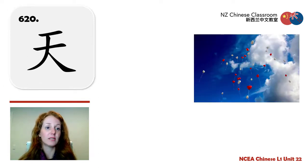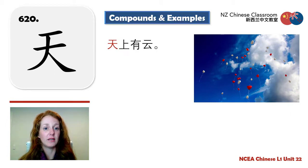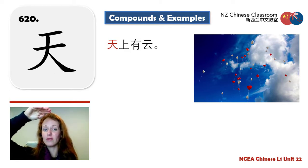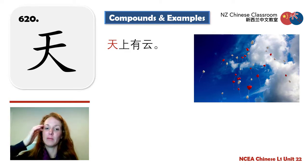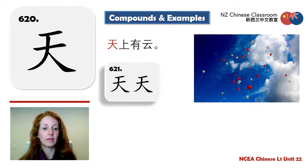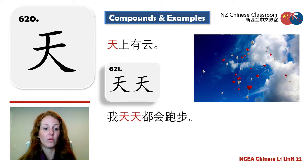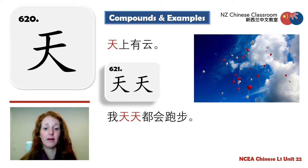天 — sky, heavens. Example: 天上有云 — There are clouds in the sky. And 天天 — not just one day, but every day. Example: 我天天都会跑步 — I run every day.